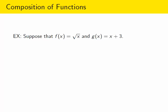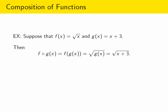Here's an example. Suppose you have the function f(x) = √x and another function g(x) = x + 3. You can make a composition by plugging g into f — that's f of g of x. Rewriting f as the square root of whatever is plugged in, and replacing g(x) with x + 3, the composition f of g of x gives us the function √(x + 3).